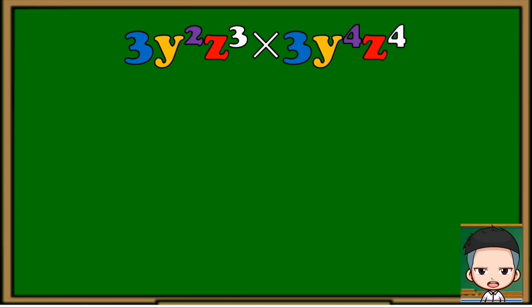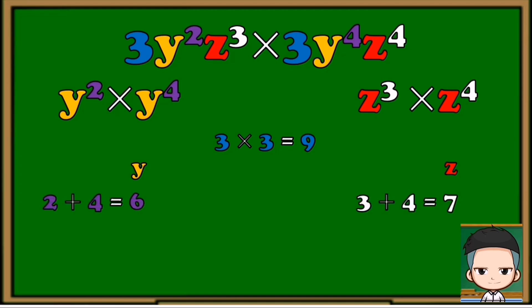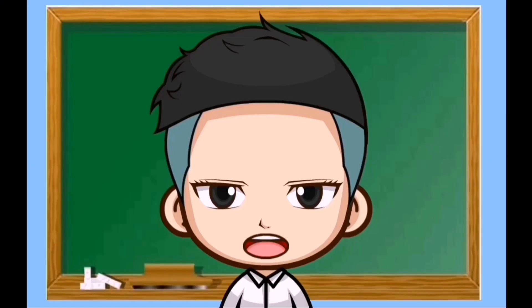Now let's multiply 3y squared z cubed by 3y raised to 4, z raised to 4. In this example, we just have to multiply those with the same variable and follow the process of multiplication of polynomials with the same variable. Lastly, put all the answers together — numerical coefficient first, then the variables in alphabetical order. And that's it — that's how you multiply polynomials.